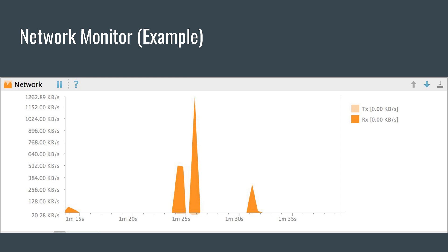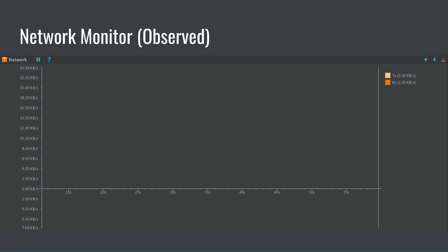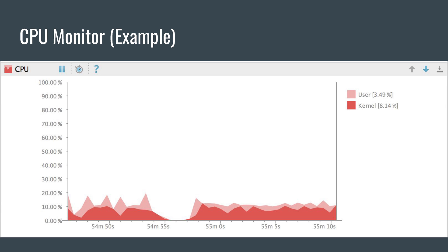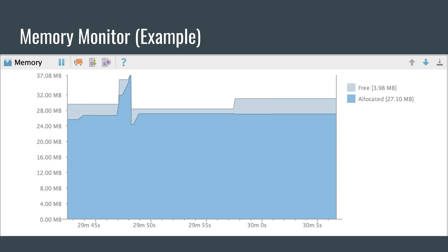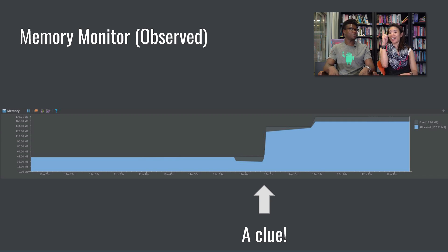So I moved on to the network monitor. The network monitor allows you to see all the traffic that your app is generating — upload and download speeds and how long you took to transmit that data. But when I opened up the network monitor, I saw nothing — it was completely flat. So I moved on to the CPU monitor, which shows what percentage of CPU time your application is using. There were a few spikes when I opened up the now playing screen, but then it quieted out. And then when I opened up the memory monitor, I saw a massive, massive spike in memory.